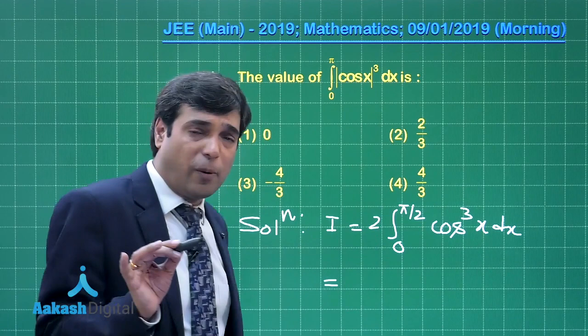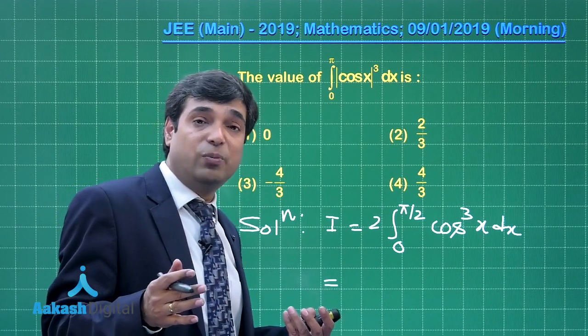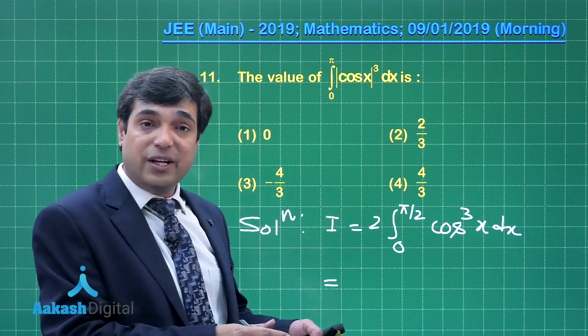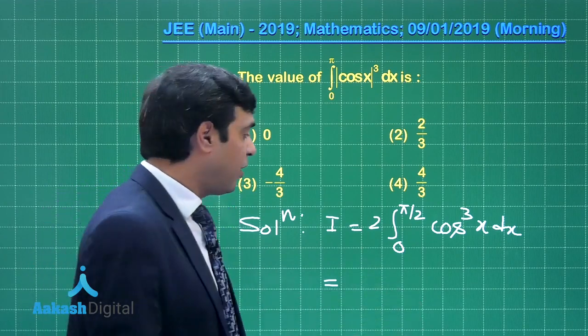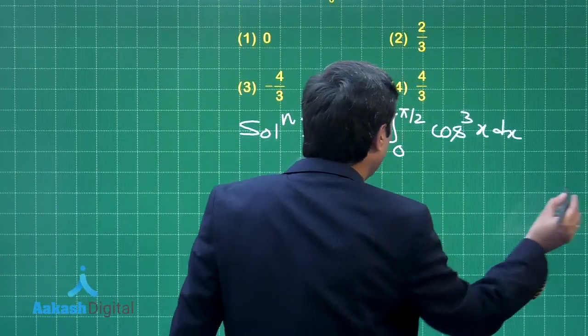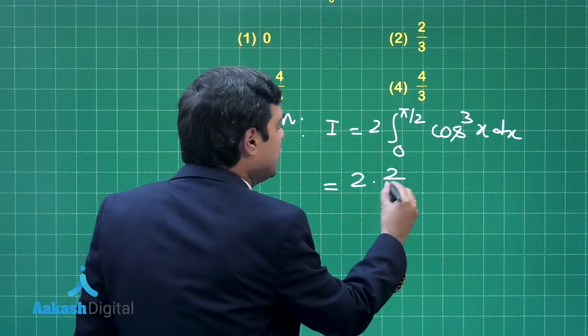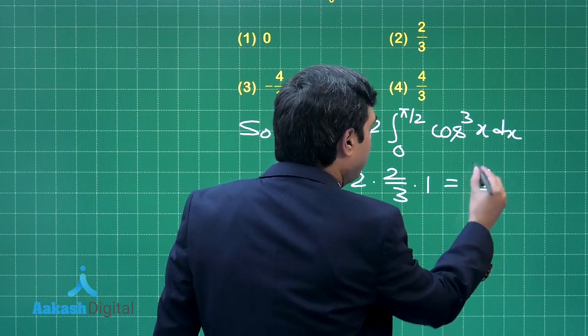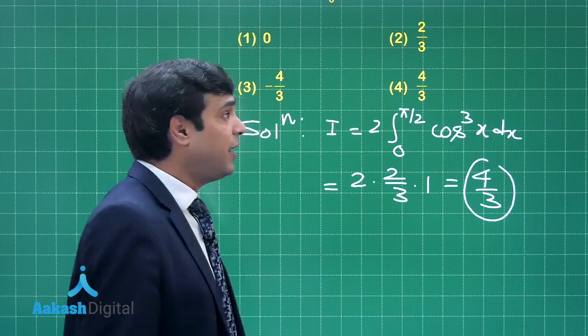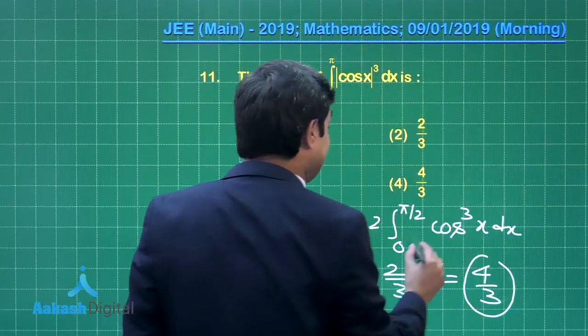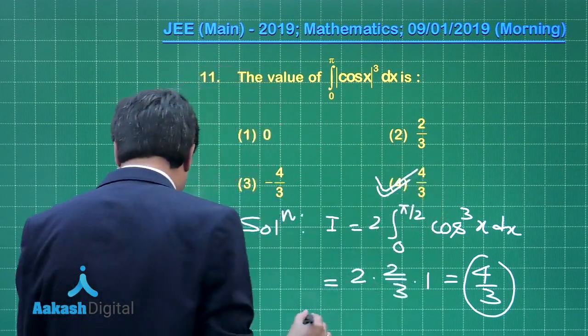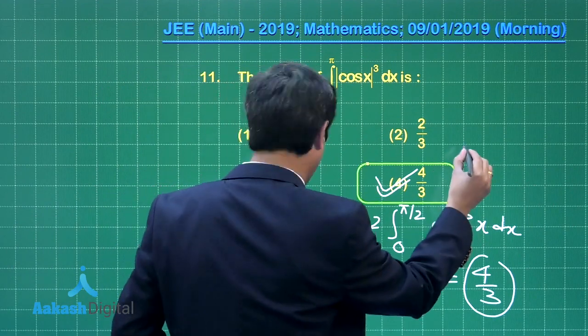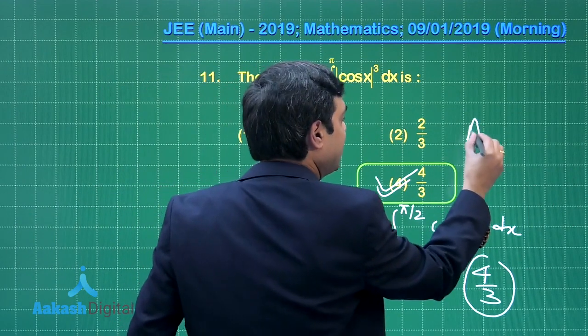After this, you have 2 options: either apply cos³x formula and convert into cos 3x, or directly apply Wallis formula. Applying Wallis rule, we have the result 2 times 2/3 into 1, so the result is 4/3. Let us look at the given options. Yes, it is there. So correct answer here is option number 4. Let us mark and mention it.